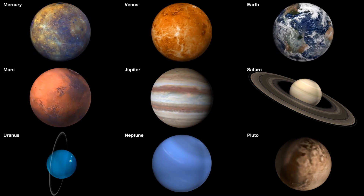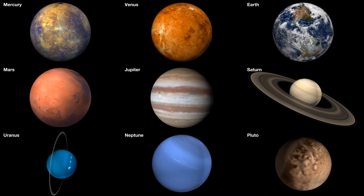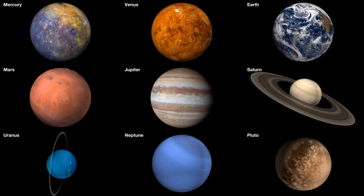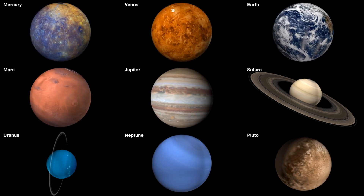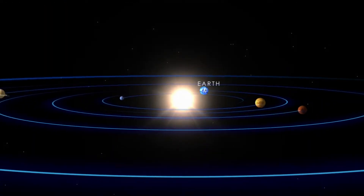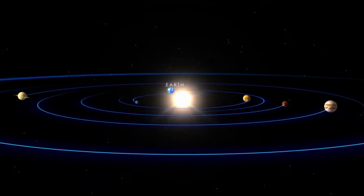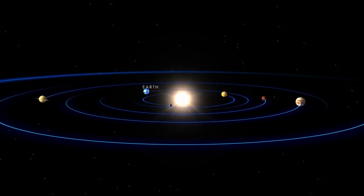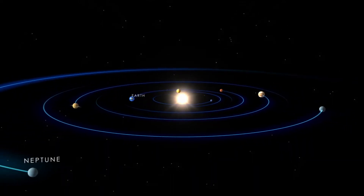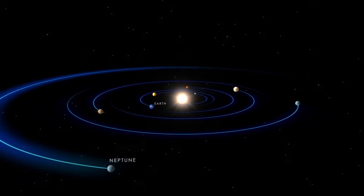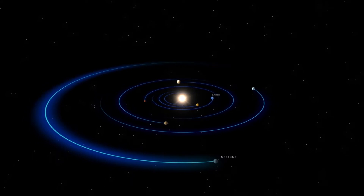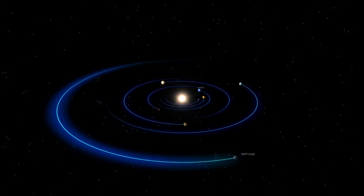Let's have a look at the order of our planets from the sun outward to the edges of our solar system. We start with Mercury, then Venus, Earth, Mars — we call these the inner planets, or terrestrial planets. Then we have the huge gas planets: Jupiter, Saturn, Uranus, Neptune, and formerly Pluto, which is no longer categorized as a planet.